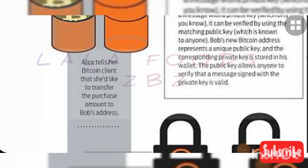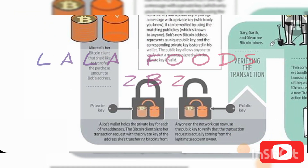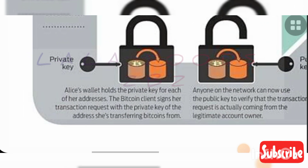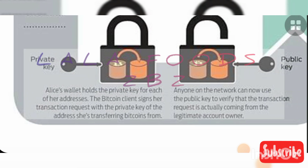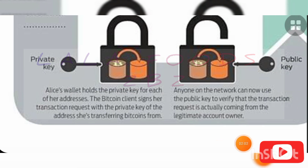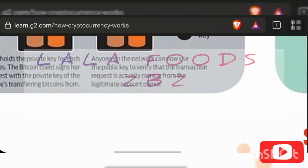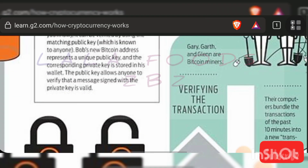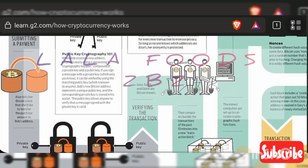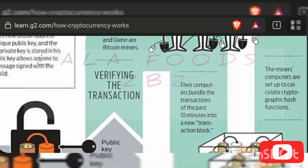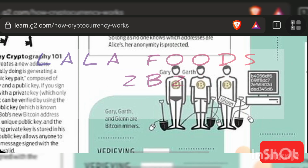Now, how does it work? Bitcoin makes use of public key cryptography to ensure the integrity of the transaction created on the network. In order to transfer Bitcoin, each participant has a pair of public keys and private keys that control pieces of Bitcoin they own.